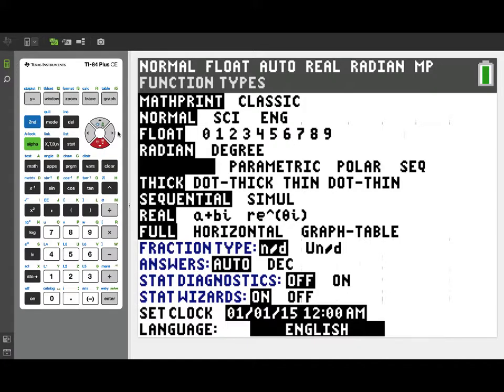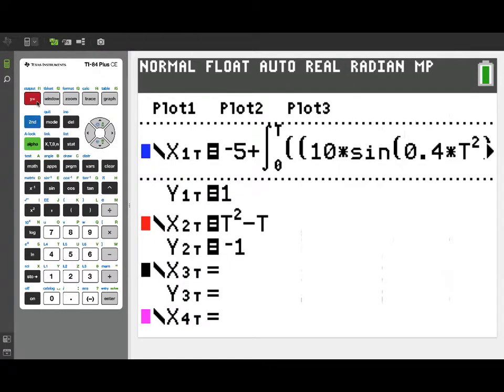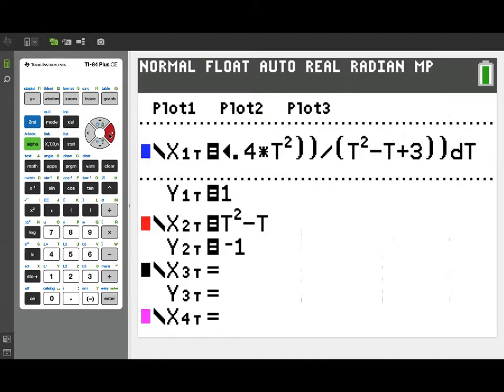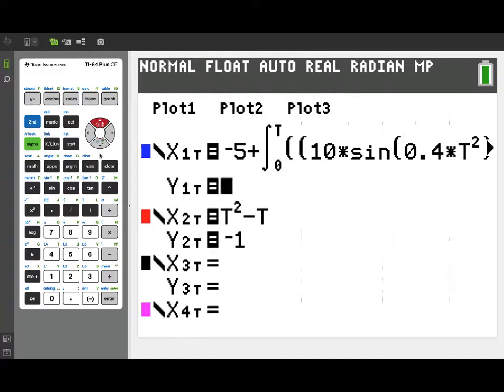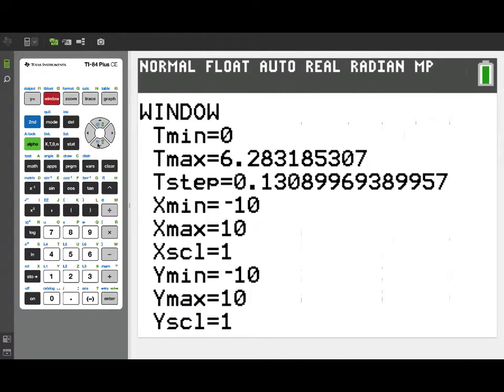Alright, now I'm going to go to parametric mode so I can actually get a look at what these particles' paths look like. Now, I've already entered the two position functions that were derived in this problem. x1 of t is that integral from negative 5 plus the integral from 0 to t of our velocity function. And in this problem, we're also given a second position function for a second particle explicitly, t squared minus t.